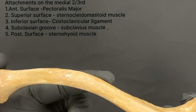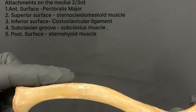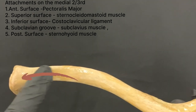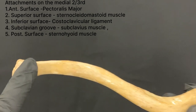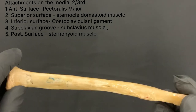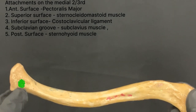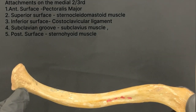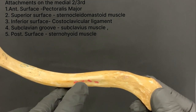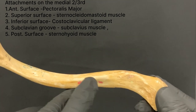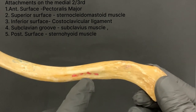Medial two-thirds of the shaft: the anterior surface gives origin to the pectoralis major muscle; the superior surface gives origin to the clavicular head of the sternocleidomastoid muscle; the oval impression on the inferior surface at the medial end gives attachment to the costoclavicular ligament; and the subclavian groove gives insertion to the subclavius muscle, whereas the two lips of the groove give attachment to the clavipectoral fascia.